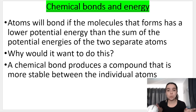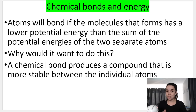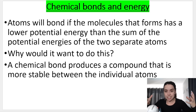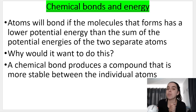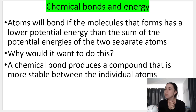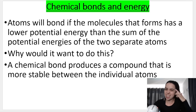This is very important: atoms will bond if the molecule that forms has a lower potential energy than the sum of the potential energies of the two separate atoms. For example, if one atom has a potential energy of 50 and another has 30, together that's 80. But when they come together, they might have a potential energy of 60. A chemical bond can produce a compound that is more stable than when its atoms are apart. Together their potential energy can be lower, therefore more stable.